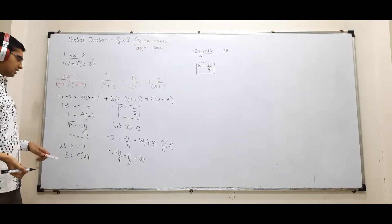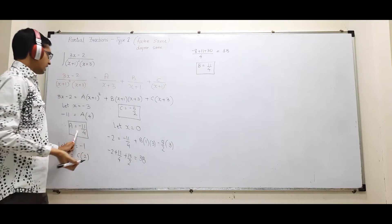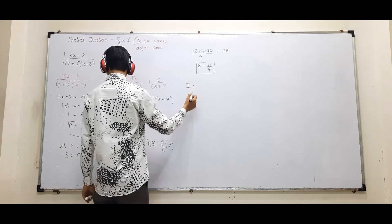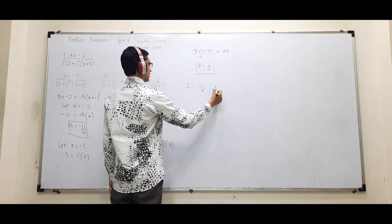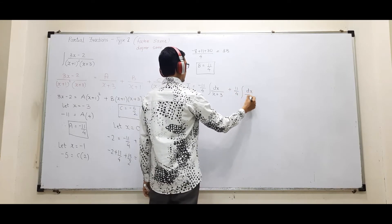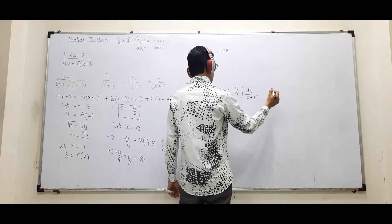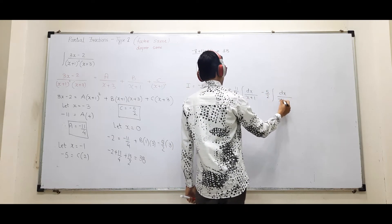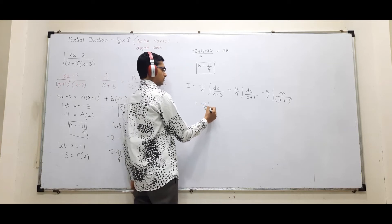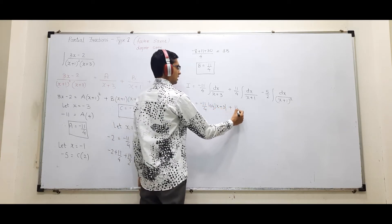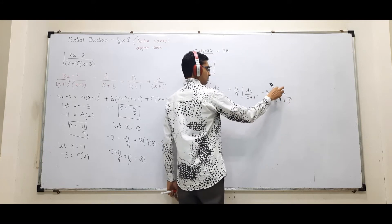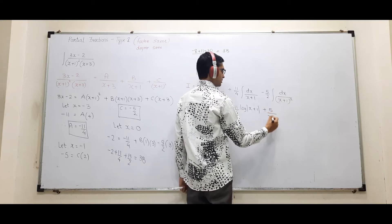Now we have A = -11/4, B = 11/4, C = -5/2. Replace A, B, C and integrate. The integral becomes: (-11/4)∫dx/(x+3) + (11/4)∫dx/(x+1) + (-5/2)∫dx/(x+1)². The first two give log terms. The last one, since degree is 1 in denominator, integrates to -1/(x+1). That's your answer.